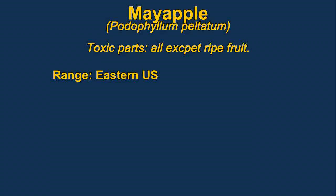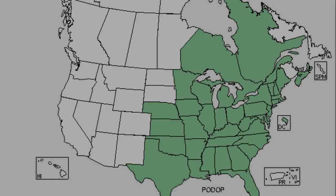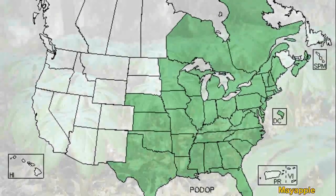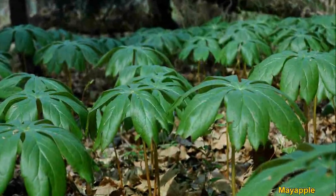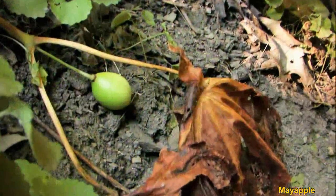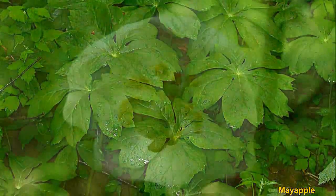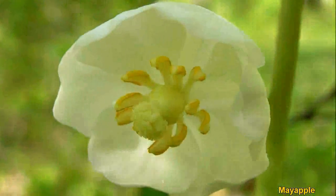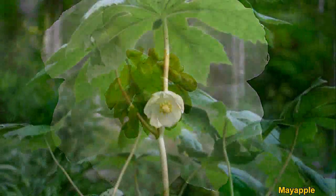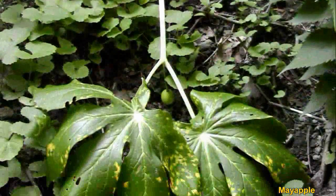May apples flower in May, but the fruit doesn't show up until summertime. All parts of the plant are toxic, except for the ripe fruit if eaten in moderation. Symptoms of poisoning include salivation, vomiting, diarrhea, excitement, headache, fever, and coma. The toxin is podophyllin. It is highly toxic and can be fatal if you eat these plants.